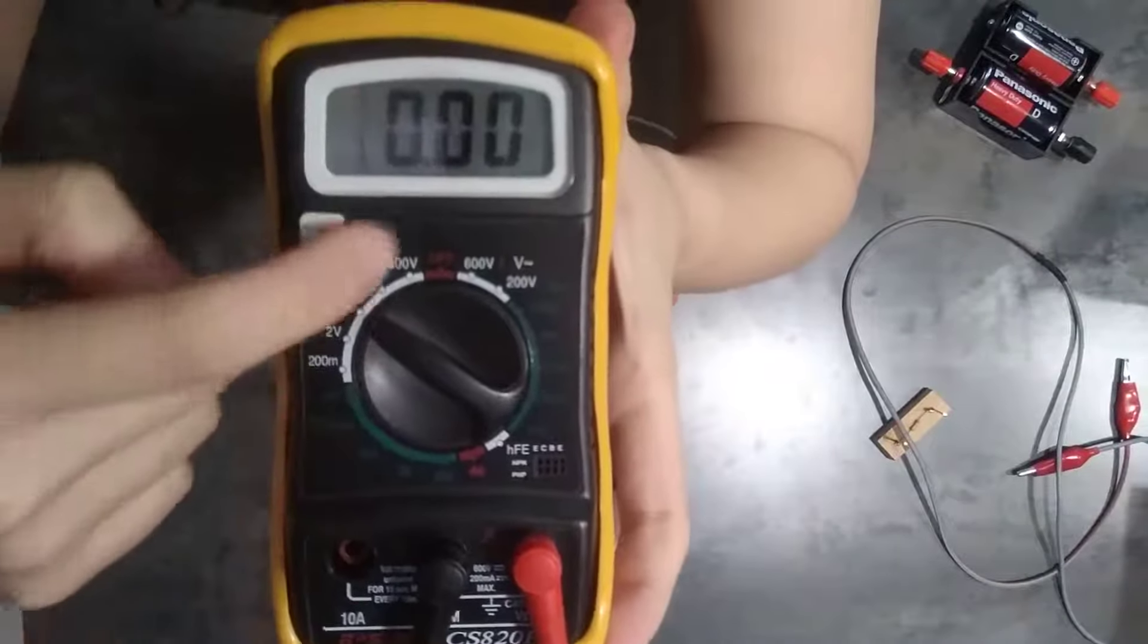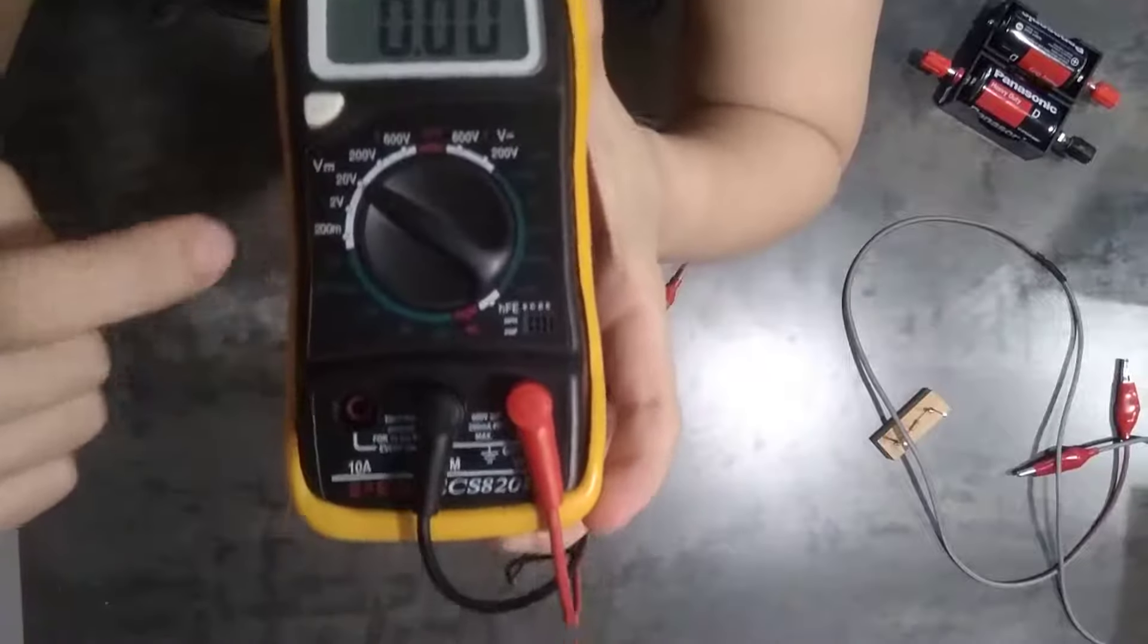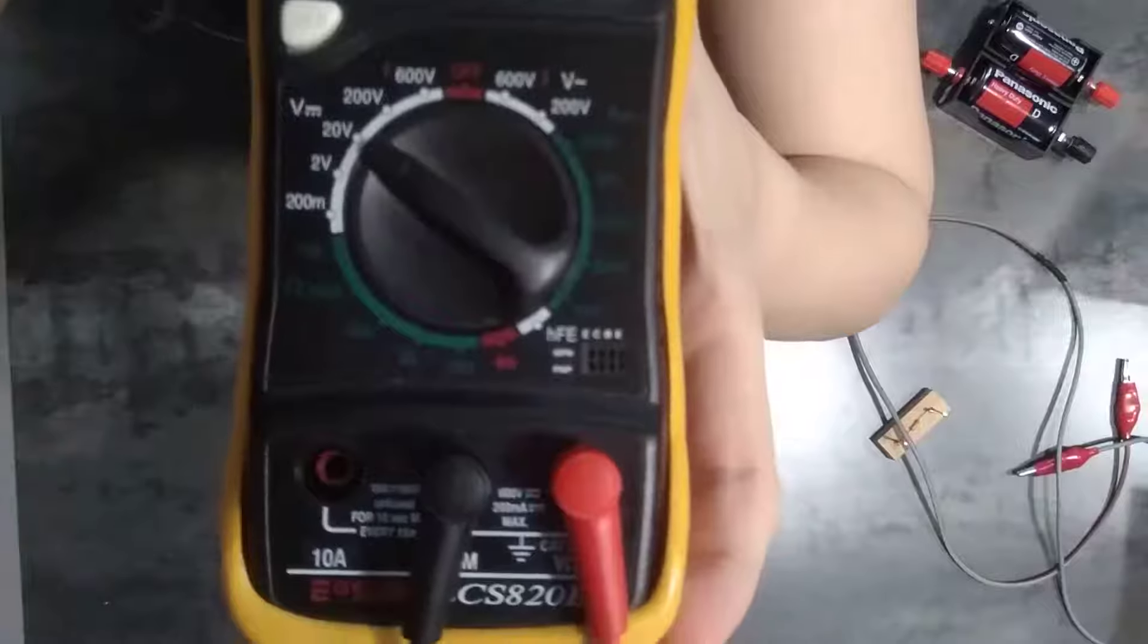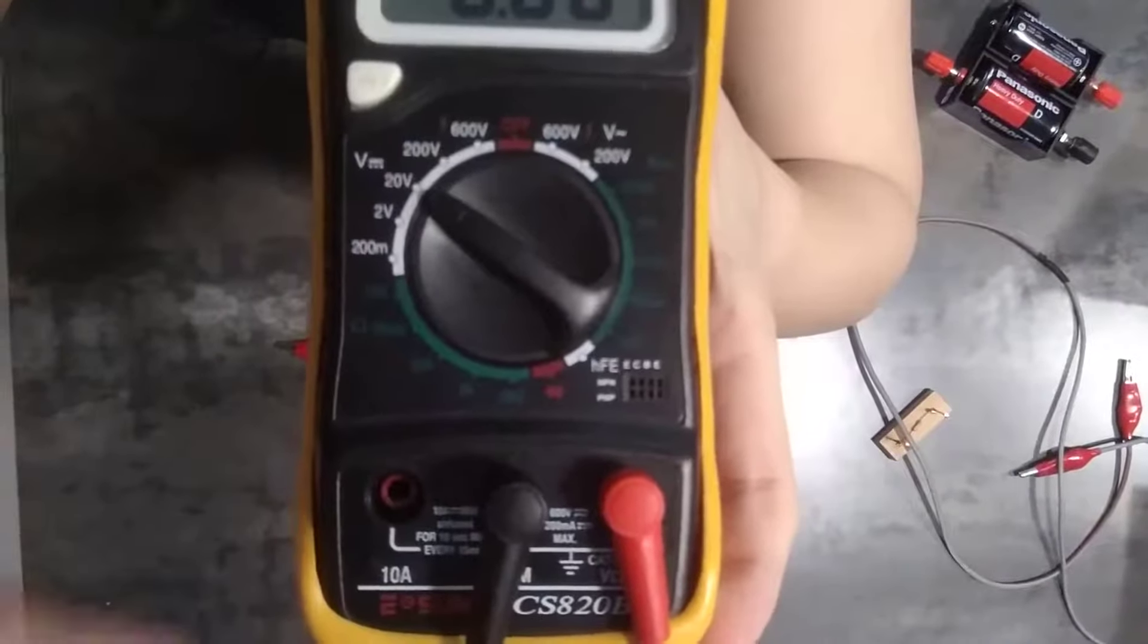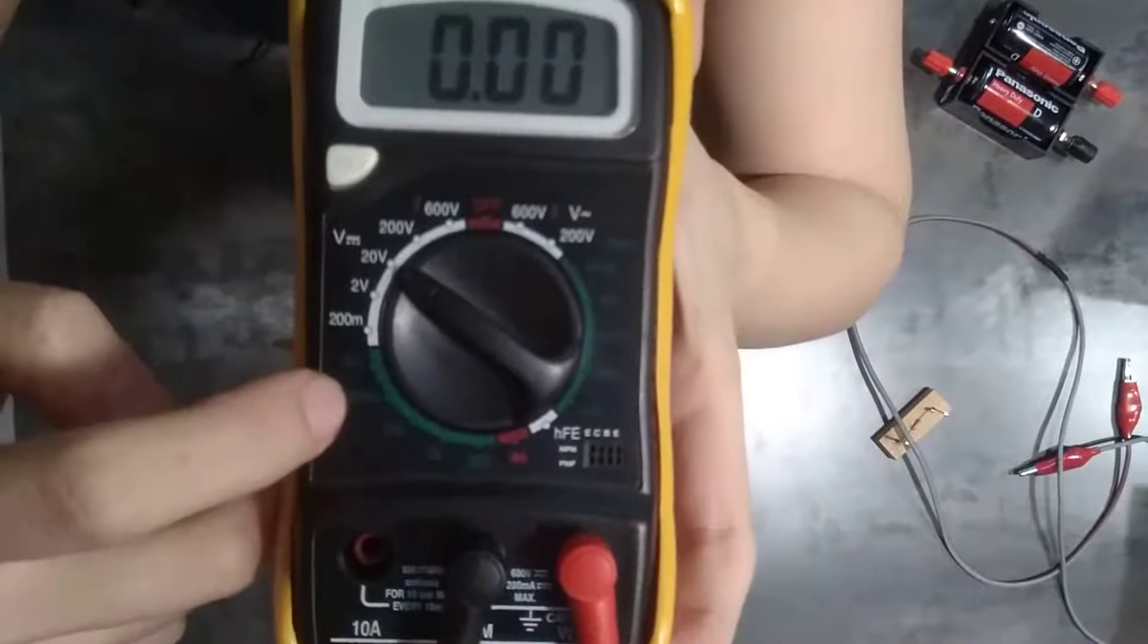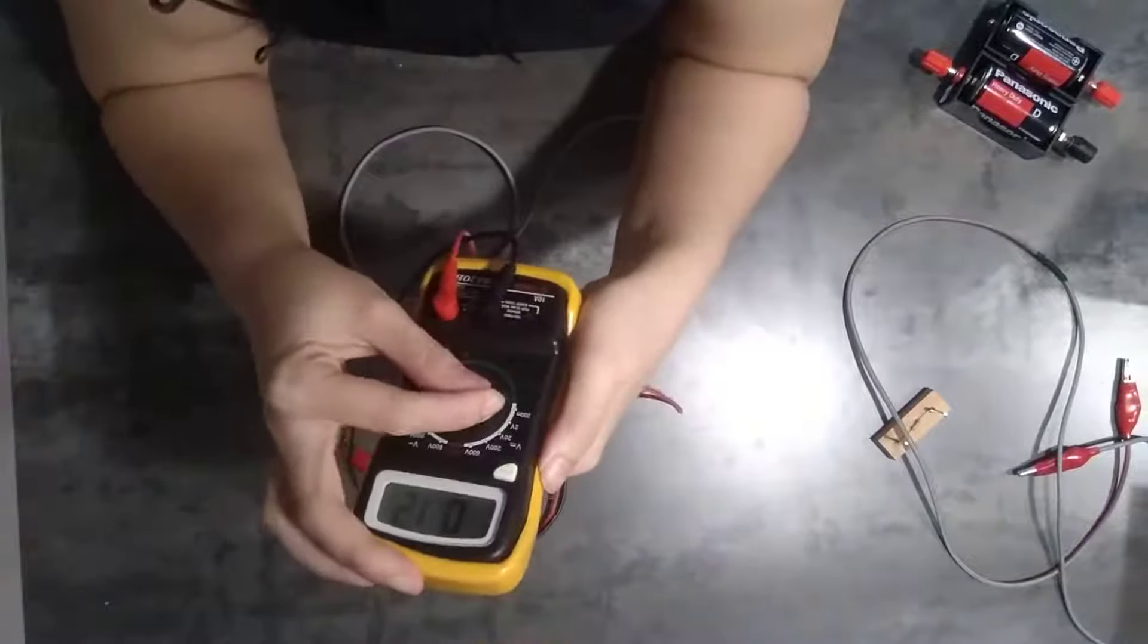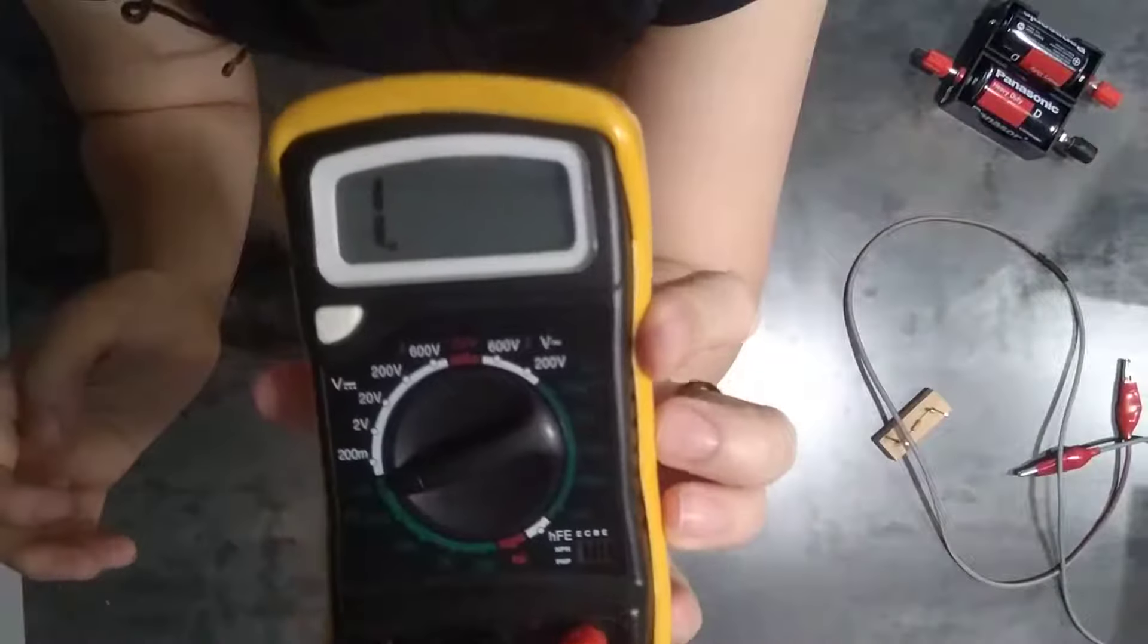So we can now move on to the next function of your multimeter. Previously, we were measuring potential difference. Now we are going to measure resistance. You see the ohm here? I mean, it's a bit dark. Let me press my camera. No, it's not going to work. So this one will be in ohm. So I'm going to adjust the knob until it's 2 mega.